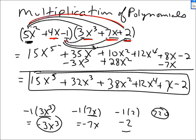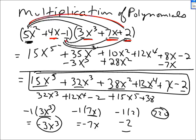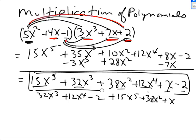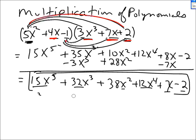Why are there 720 different ways to write this answer? Because you could rearrange the terms in any order you like — for example, 32x cubed first, then 12x to the 4th, then minus 2, then 15x to the 5th, etc. There are 720 different ways. But if your teacher says it has to be in descending order, there's only one answer, and you could add one more line.